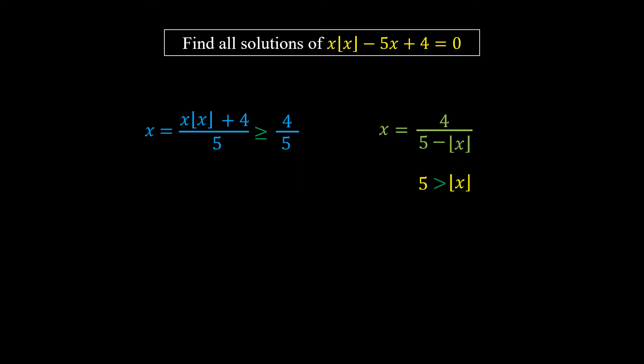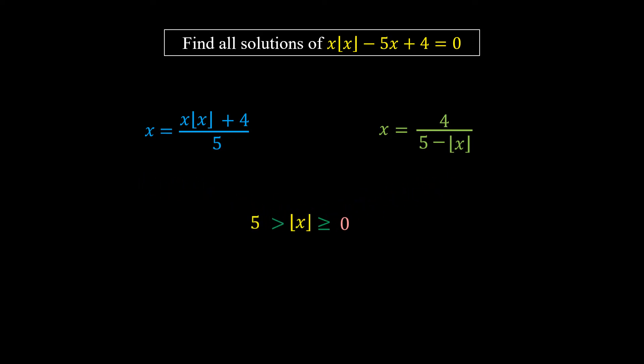Back to the first form of x, we have the floor value of x is greater than or equal to 0. Therefore the floor value of x is greater than or equal to 0 and less than 5. Since the floor value of x is an integer, all the possible values are 0, 1, 2, 3, and 4.